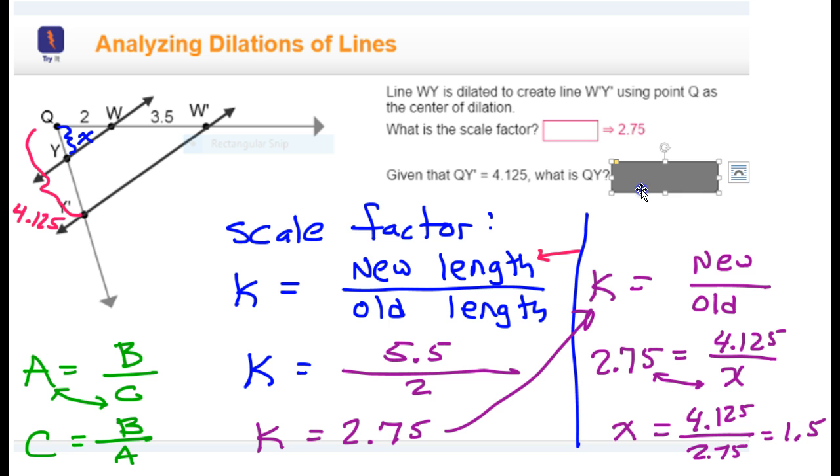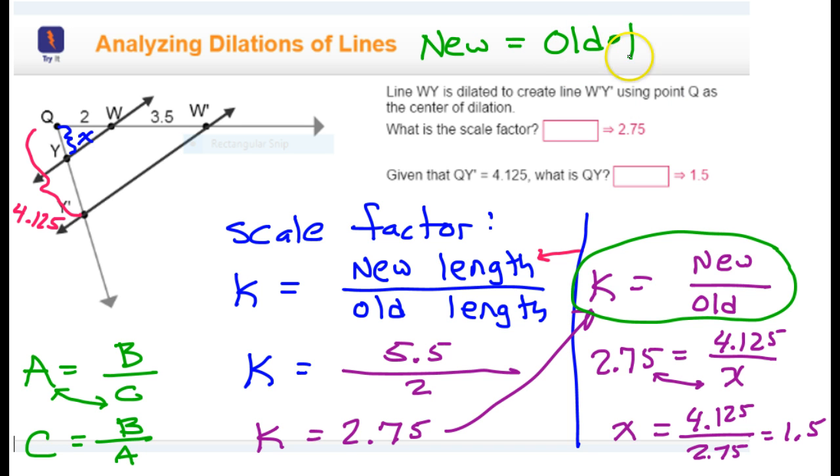And that gives me 1.5. So, that should be the distance of QY. Now, we're finished answering these questions, but just to add to your knowledge a tiny bit more, another way of looking at this formula is to say that the new distances should equal the old distances times the scale factor. I'm just rewriting this equation in another way.